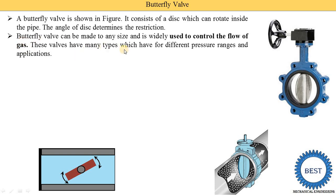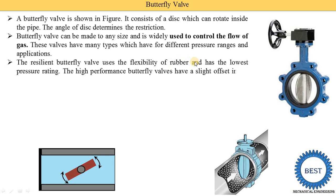This valve have many types which have four different pressure ranges and its applications. The resilient butterfly valve uses the flexibility of rubber and has the lowest pressure ratings.